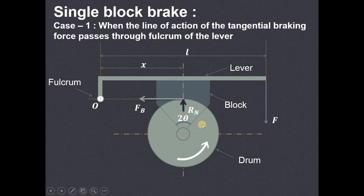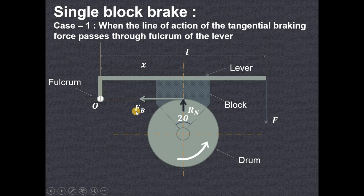The normal reaction will be applied by this drum on this block and that is acting in the upward direction, because the block or shoe is pressed in the downward direction. The tangential force or braking force is FB, and this particular FB component shown is on the block and not on the drum. On the drum it will be acting in the opposite direction.